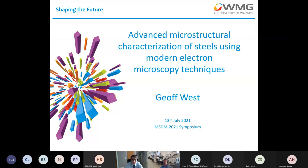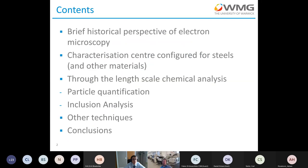My name is Jeff West and I'm going to talk about advanced microstructural characterization of steels using modern electron microscopy techniques. I'm going to start with a brief historical perspective on electron microscopy, so that I can define my use of the word 'modern' in my title. I'll then give a brief introduction to our characterization center, introduce our through-the-length-scale chemical analysis capability and show how we're using it for precipitate and inclusion analysis using a few case studies, and then draw a couple of conclusions.